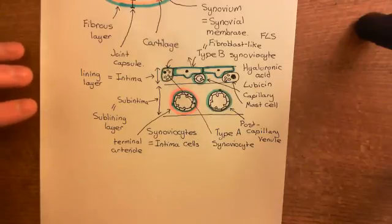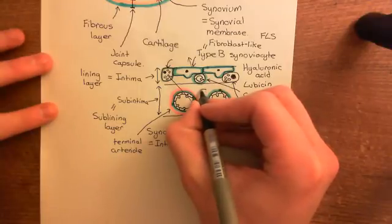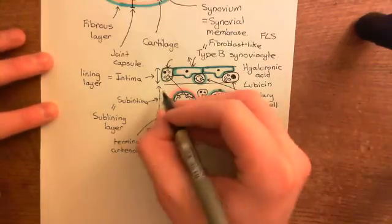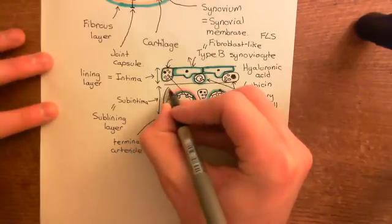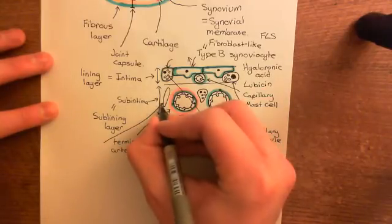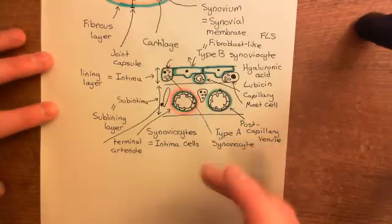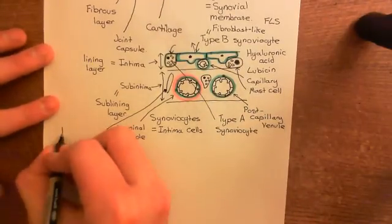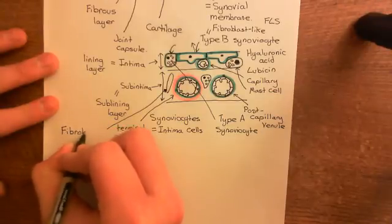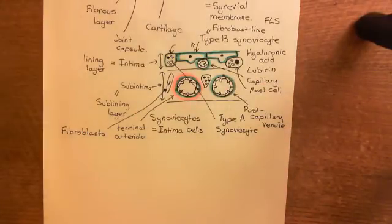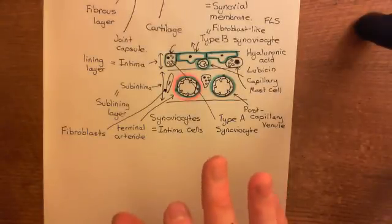Other structures within the sub-intima include macrophages — which have very prominent mitochondria — and fibroblasts. The fibroblasts create the connective tissue that makes up the sub-intima, as most of the sub-intima is extracellular matrix connective tissue. Fibroblasts have a very elongated shape with an elongated nucleus and are found in amongst the connective tissue of the sub-intima.